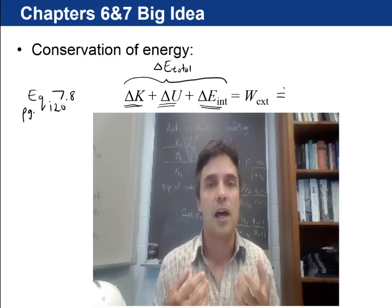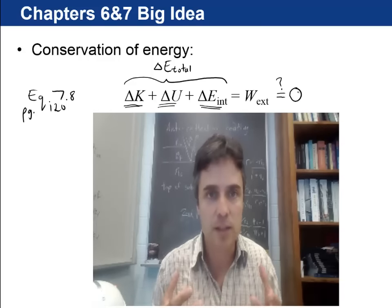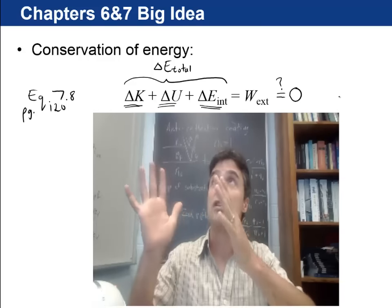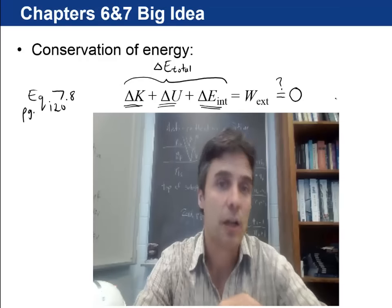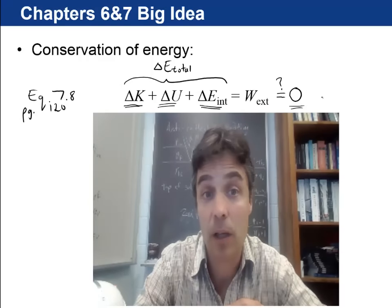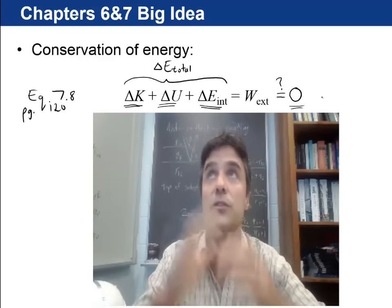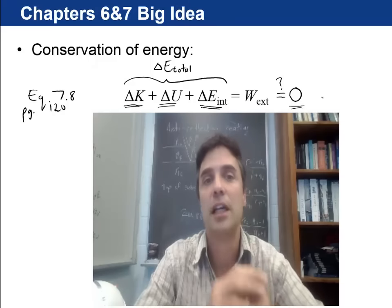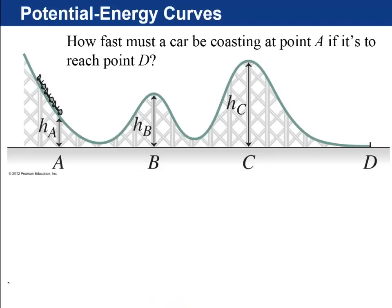So the total change in all this energy is equal to the work of external forces. And if there is no external forces doing work on the system, then the change in the total energy equals zero. And that's often what happens in these problems, and that's how you solve a mechanics problem, is that you set the change in the total energy equal to zero.